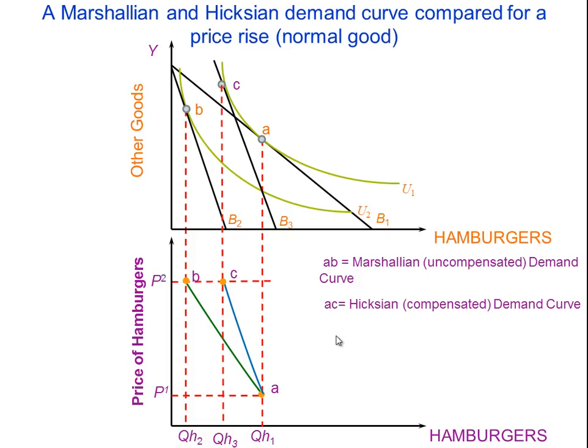We were looking at the impact of a price change on hamburgers for Martin, the income and substitution effects derived because hamburgers are considered by Martin to be a normal good, and we derived both the Marshallian and the Hicksian demand curve. Thanks very much for listening.